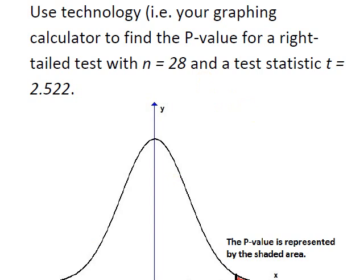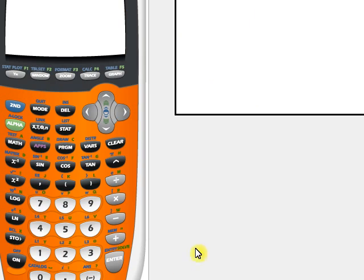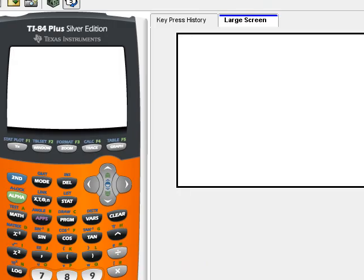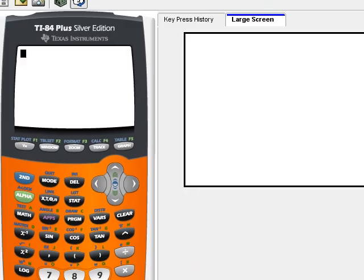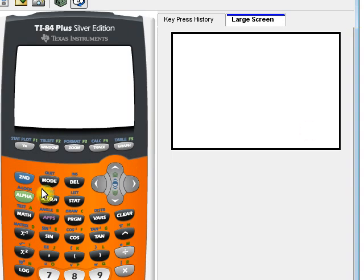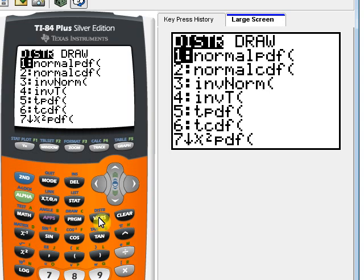Let's go ahead and start to do the computation. So we hit the second key on our calculator. And then the vars key, that gets to that distribution menu. And notice that option six is that tcdf command that we talked about. So I'll just go ahead and hit the number six. You could also scroll down and highlight that and hit enter if you'd like.